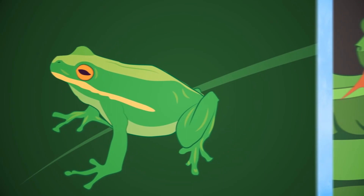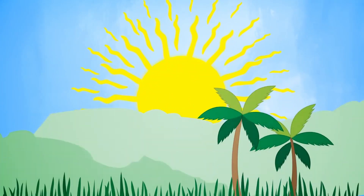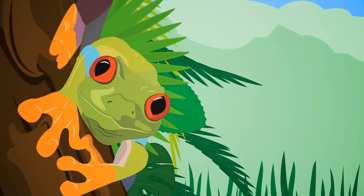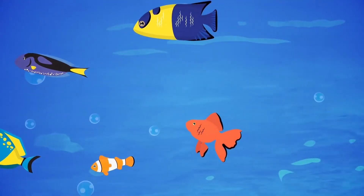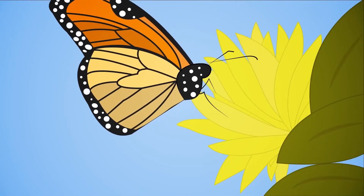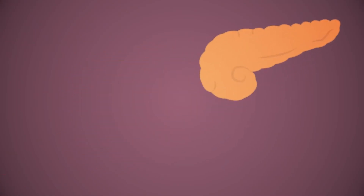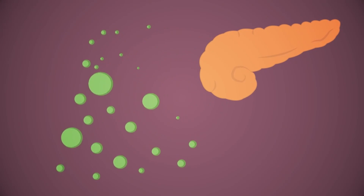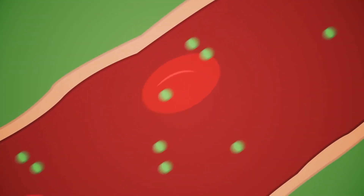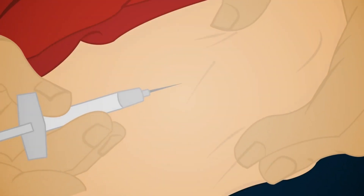Body temperature is one of the most common internal conditions an organism must maintain — the human set point is 98.6 degrees Fahrenheit. Endotherms, such as birds and mammals, rely mostly on metabolism to maintain temperature. Ectotherms, such as frogs and snakes, rely on environmental sources to regulate internal temperature. Organisms must also regulate blood glucose levels. When glucose is low, the pancreas releases glucagon to stimulate glucose formation. When too much glucose is present, the pancreas secretes insulin to remove sugar. Diabetes results when the body cannot maintain blood glucose levels.